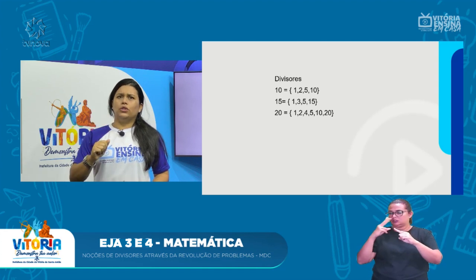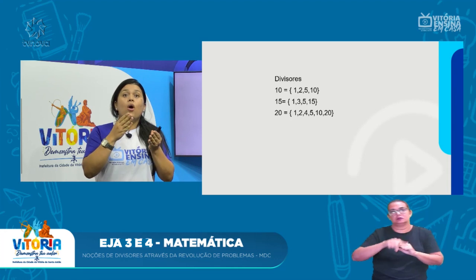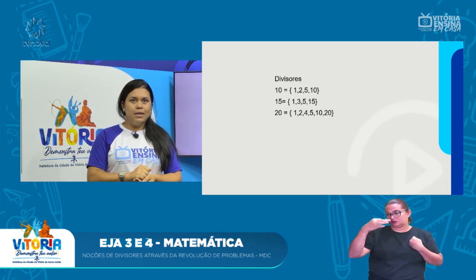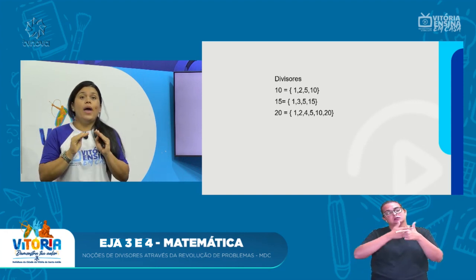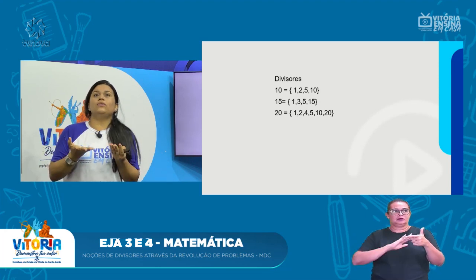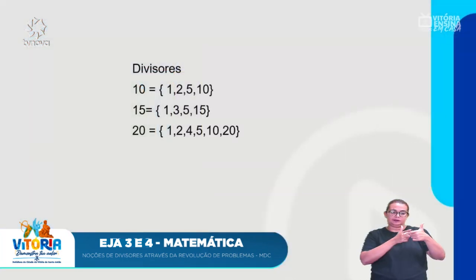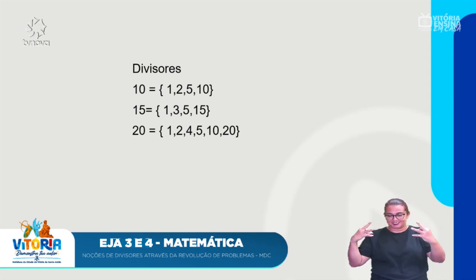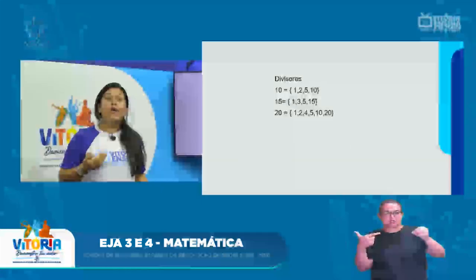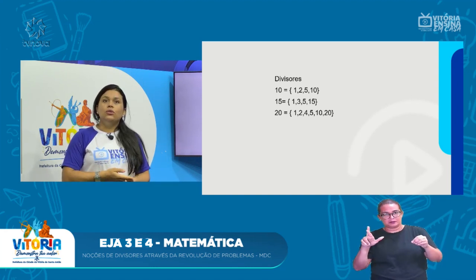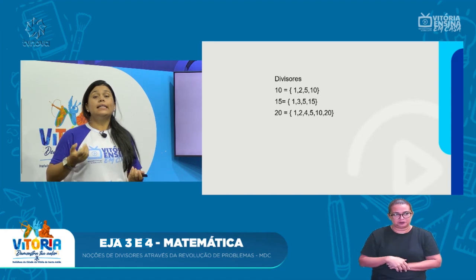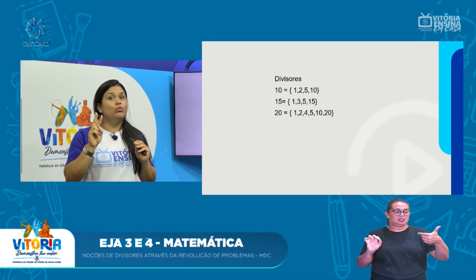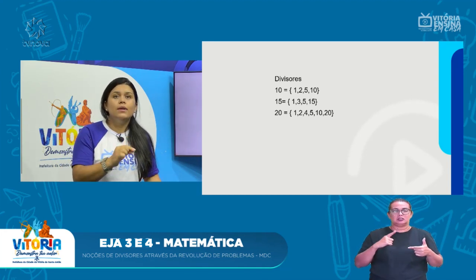E os divisores? Os divisores nada mais são do que os números que dividem um determinado valor. Olha aí o nosso quadro. Um exemplo: o 10. Quais são os números que dividem 10 e o resto é 0? Não vai sobrar nada. Então, esses são os divisores. Os números que dividem 10: é o 1 — o 1 divide todos os números. O 2 divide 10 porque 10 é um número par. O 5 divide o 10 porque 5 mais 5 é 10, ou seja, 2 vezes 5. E o 10 também divide ele mesmo. Então, um dos números que dividem todos os valores é o número 1 e ele mesmo.